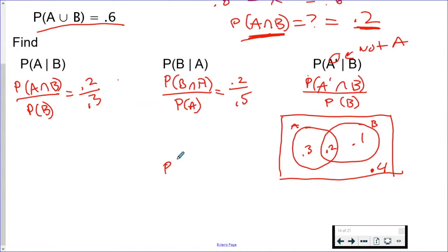So now to find probability of not A intersecting B. So here, not A would be everything not in A. So this is not A, and that's not A. But I want to know which part of not A intersects B. Well, this is not B, but this is.